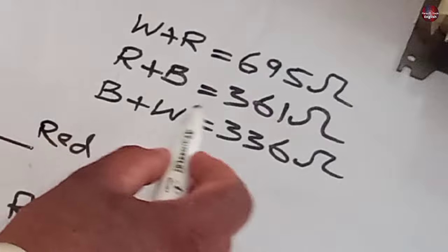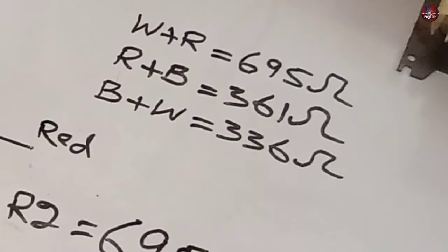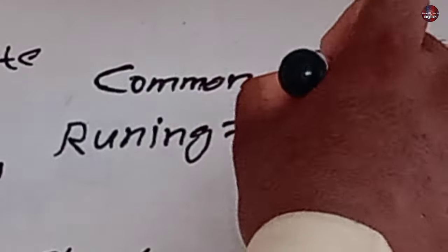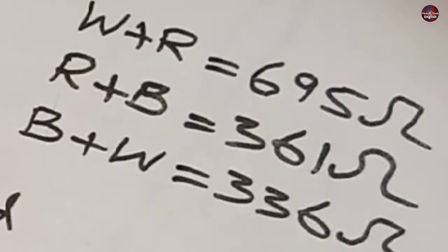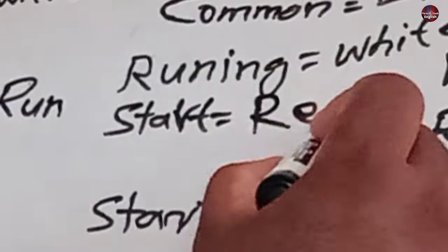It means the value of the wire with the lowest resistance will be the run winding. Running winding is the white wire. The starting always has a medium value. This means the start is the red wire.